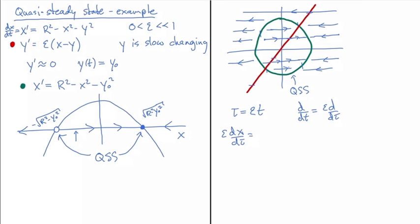That is going to be equal to r² - x² - y². And epsilon y-dot is equal to ε(x - y). Now you'll notice that these epsilons cancel, so y is no longer changing slowly. That's because we're watching it on the scale of hours, so it seems to be a reasonably fast rate of change.